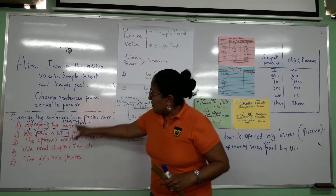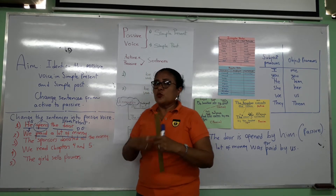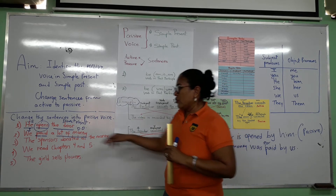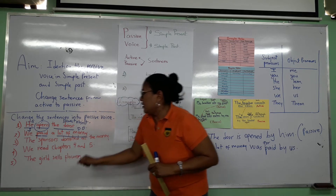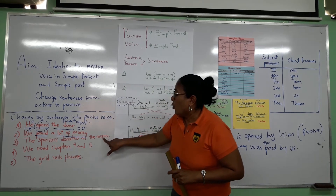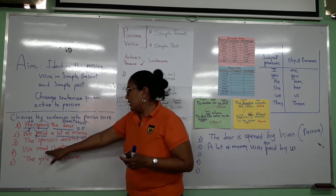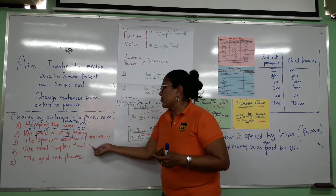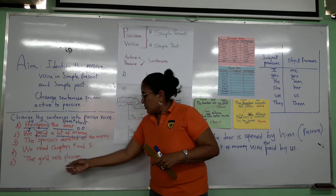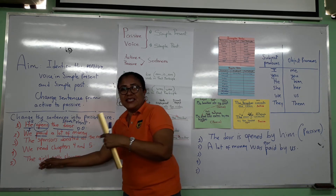To change a sentence to passive, it must have a direct object. For example: 'The sponsors donated all the money' becomes 'All the money was donated by the sponsors.' 'We read chapters four and five' becomes 'Chapters four and five were read by us.' 'The girl sells flowers' — present tense — becomes 'Flowers are sold by the girl.' Las flores son vendidas por la chica.